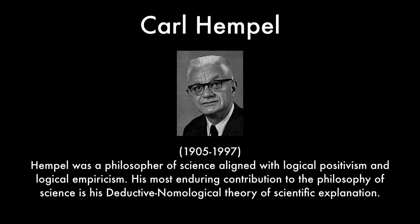Carl Hempel, who was alive for most of the 20th century, was a philosopher of science aligned with logical positivism and logical empiricism. His most enduring contribution to the philosophy of science is his deductive-nomological theory of scientific explanation — the picture of scientific explanation that we're looking at in this lecture.